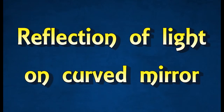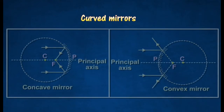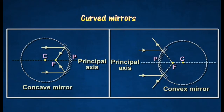Reflection of light on curved mirrors. Curved mirrors which form parts of the surfaces of spheres are called spherical mirrors. There are two types of spherical mirrors: concave mirrors and convex mirrors.